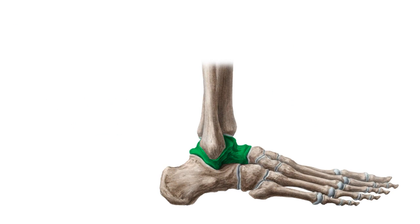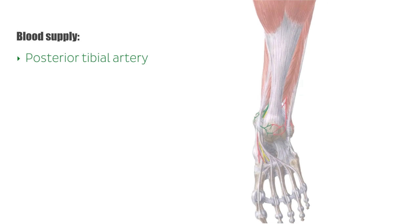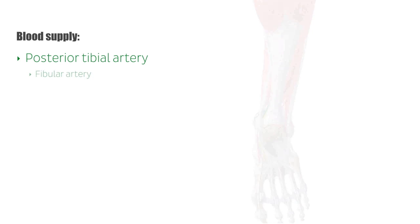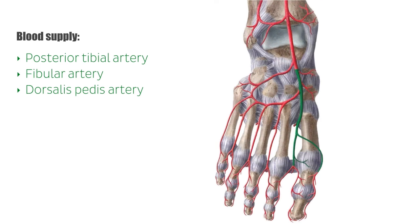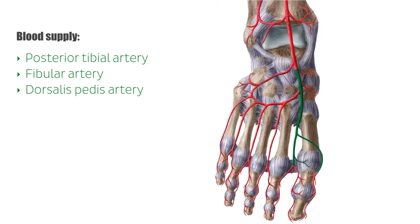The talus receives arterial blood from three sources: the posterior tibial artery, the peroneal or fibular artery, and the dorsalis pedis artery. Because of the lack of muscular attachment to the talus, its blood supply is considered tenuous. This is clinically important, as the talus — which is mostly cartilage — can be difficult to heal in the case of an injury due to its limited blood supply.